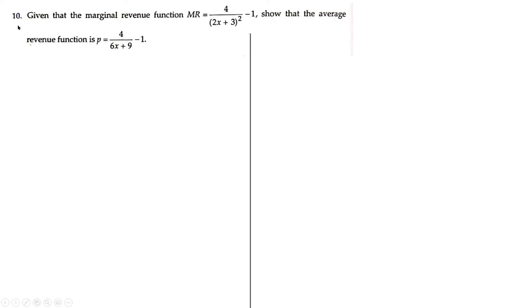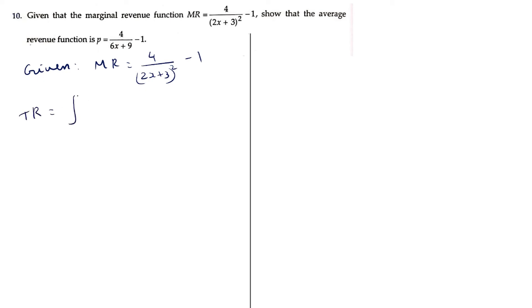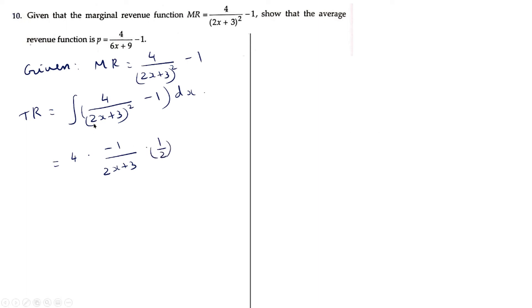Moving on to question 10: given MR = 4/(2x+3)² - 1, show that the average revenue function is p = 4/(6x+9) - 1. First, find the total revenue function. Given MR = 4/(2x+3)² - 1, TR = integral of [4/(2x+3)² - 1] dx.